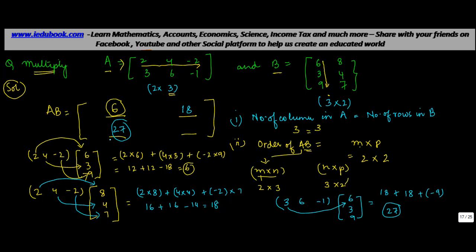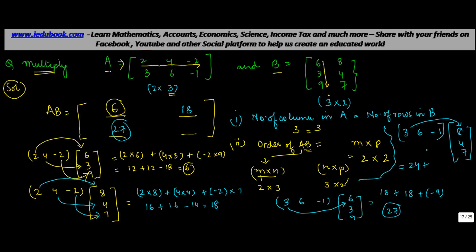For the second row, second column, you take the second row of A — 3, 6, −1 — and the second column of B: 8, 4, 7. So: 3×8 = 24, plus 6×4 = 24, plus (−1)×7 = −7. That gives 48 − 7 = 41, which goes into the second row, second column of AB.